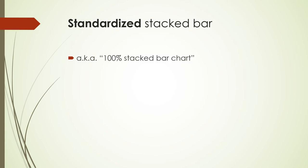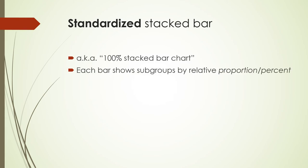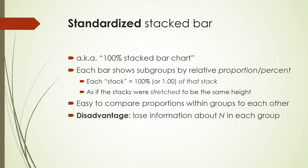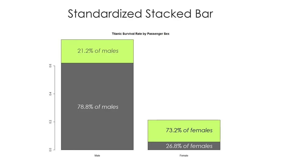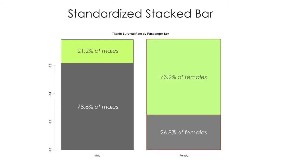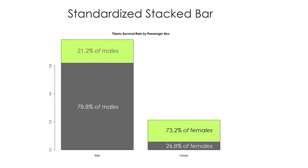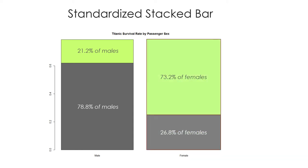A standardized stacked bar — sometimes called a 100% stacked bar chart — is where you stretch each bar to be the same height as each other, and then compare relative proportions within groups. This is exactly like doing a bar chart of only the row percentages or column percentages. The disadvantage is you lose information about the sample size in each group, and it can still be difficult to compare blocks because it's stacked. In this case, 73.2% of females survived compared to 21.2% of males — you can stretch the bars to the same height and see that huge difference in percentages.